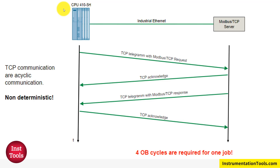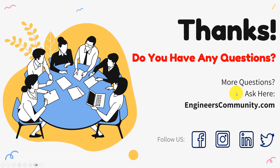That is a brief introduction of how PCS7 architecture takes data from Modbus RTU or Modbus TCP devices. I hope you understood it clearly. If you find our videos helpful, don't forget to give us a thumbs up and subscribe to our channel for more exciting content on industrial automation. Thank you for watching and we will see you in the next video. Goodbye.